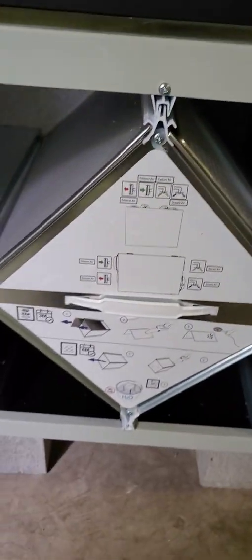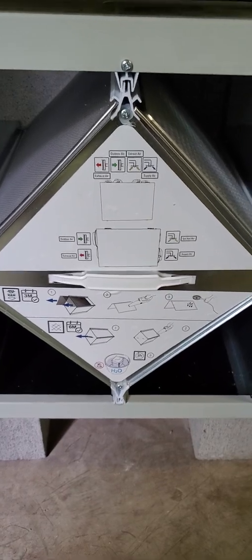This is what the fins of the coil look like. So the air passes through there but the stale air never touches the fresh air. It just picks up the heat from one side and transfers it to the other.